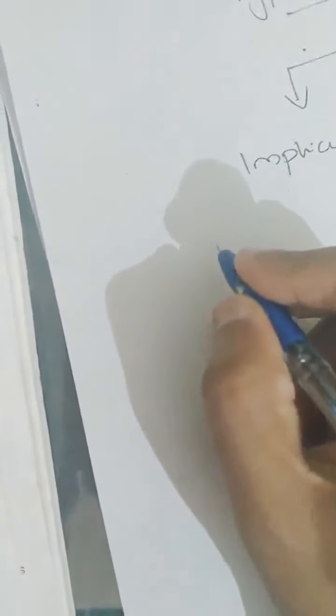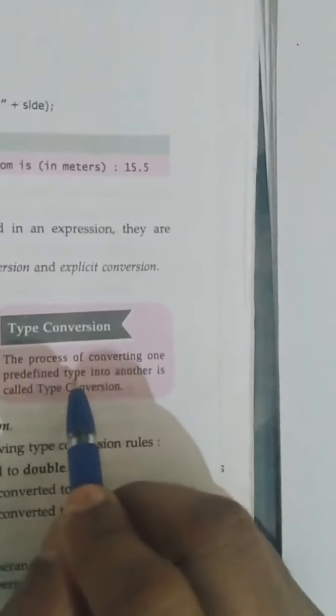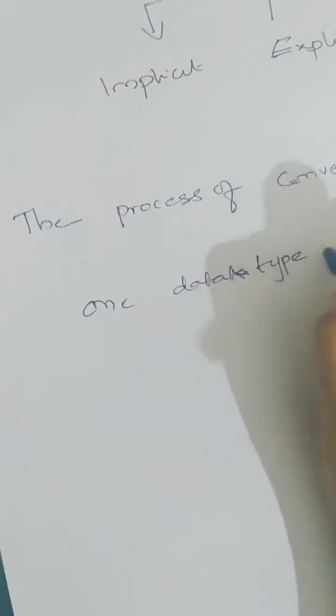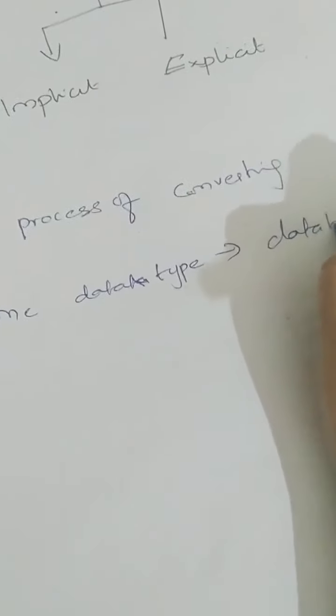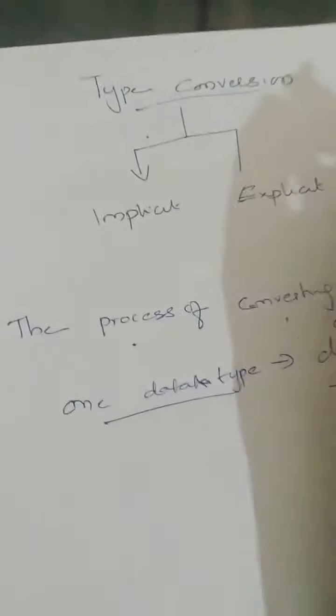Hello everyone, today we are going to learn the topic type conversion. What is type conversion? Converting a data type or a variable from one type into another is known as type conversion. The process of converting one predefined type into another is called type conversion. It is divided into two types: implicit and explicit.